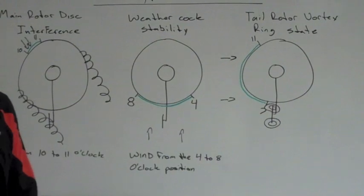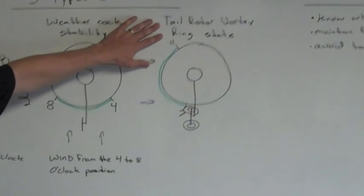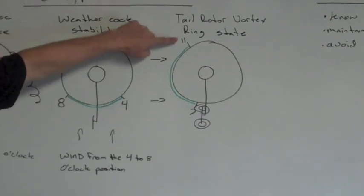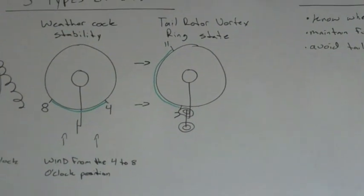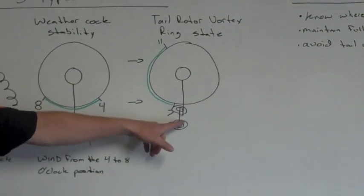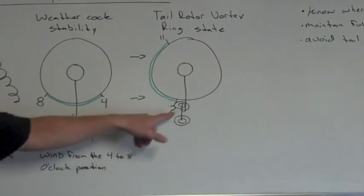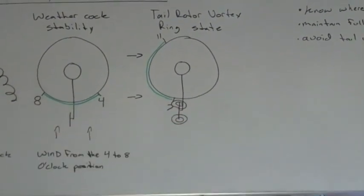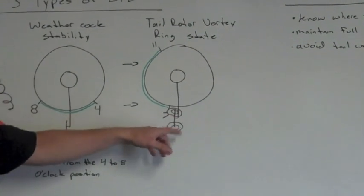The third type is called the tail rotor vortex ring state. It occurs when the wind is coming at the helicopter from the 11 to the 7 o'clock position. Basically what it does is it blows the downwash from the tail rotor back into the system, causing a ring state, known as a vortex ring state. Therefore, it's reusing the same air and not creating any thrust.